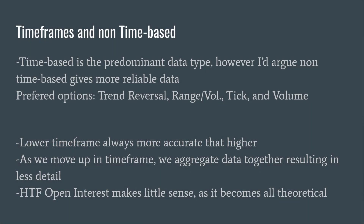Let's cover time-based versus non-time-based charts. Time-based is without a doubt the predominant data type — it's what you'll run into with most order flow software by default. However, I'd like to argue that non-time-based will give you more reliable data. My preferred options are things like tremor reversal, range or vol, tick, and volume. The default I go to nowadays is always tremor reversal. If that's not available I'll look to tick and volume.